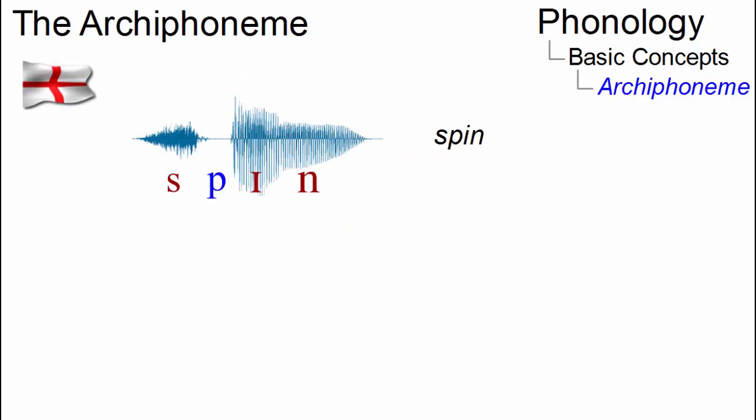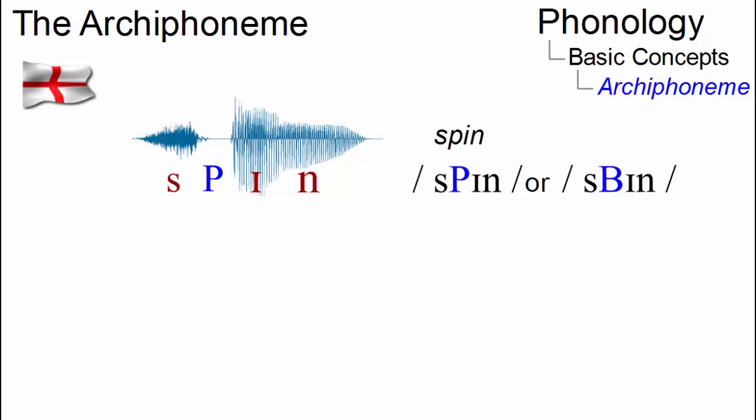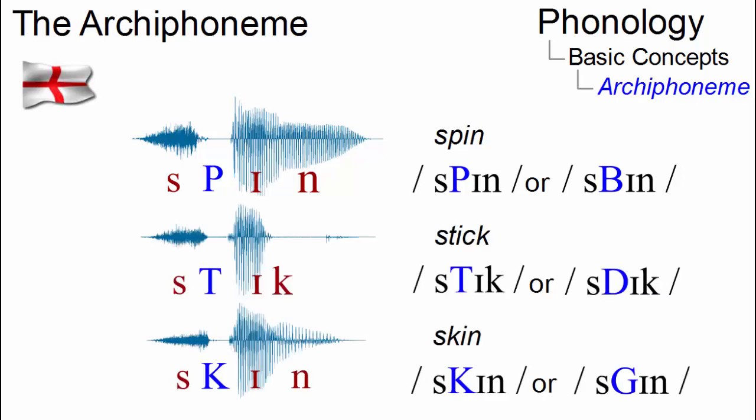The spin problem, for example, where the second segment is neither p nor b, could now be handled by means of an archiphoneme, which by convention was assigned a capitalized symbol such as capital P or capital B, sharing all properties common to b or p. And by analogy, we can introduce archiphonemes to represent the plosives in stick and skin.